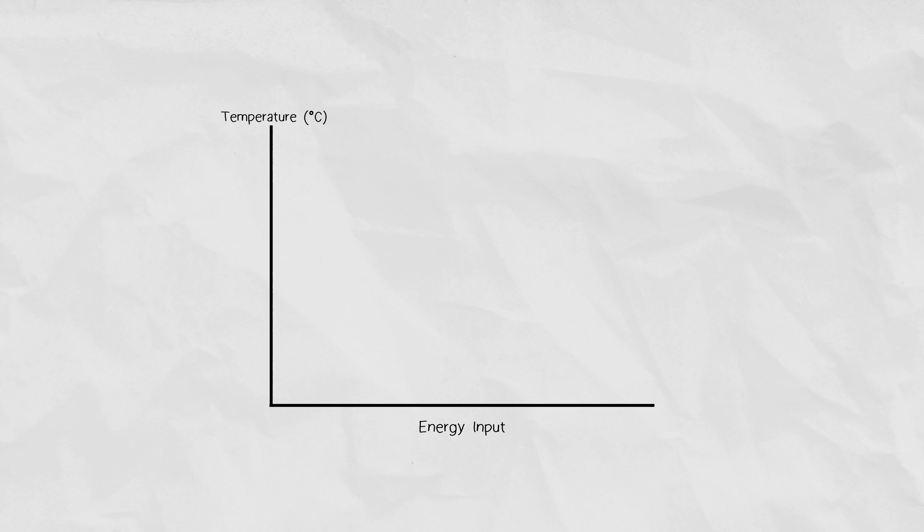If you start with ice at negative 50 degrees Celsius, you can expect its temperature to increase as you add energy from the flame. When the ice reaches 0 degrees Celsius, it starts to melt, but something weird starts to happen in the graph.